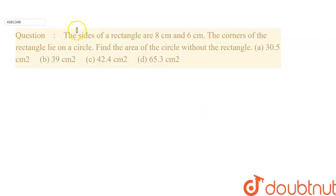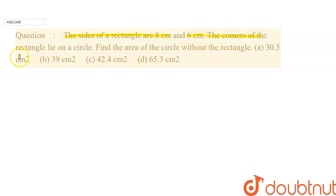Hello everyone, the question is: the sides of a rectangle are 8 cm and 6 cm. The corners of the rectangle lie on a circle. Find the area of the circle without the rectangle.